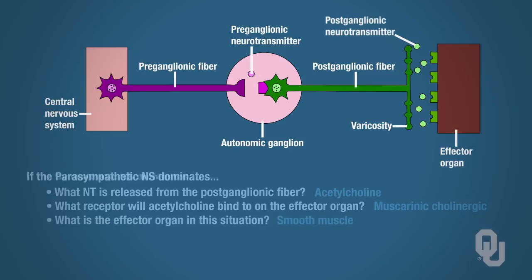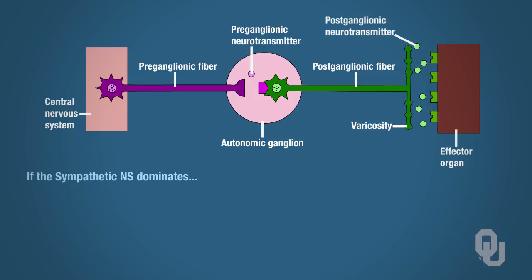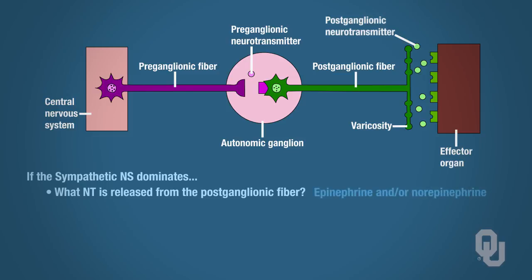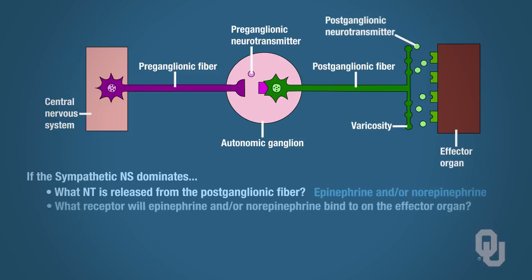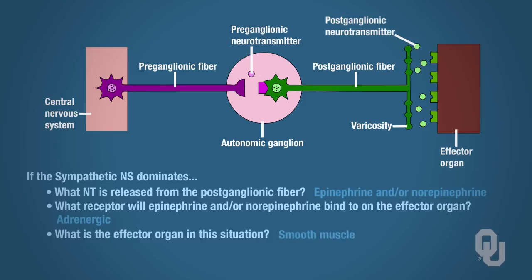Switching back to the sympathetic nervous system dominating — what neurotransmitter is released from the postganglionic fiber? Epinephrine and/or norepinephrine. What receptor will epinephrine and norepinephrine bind to on the effector? Adrenergic. What is the effector organ in this case? Smooth muscle.